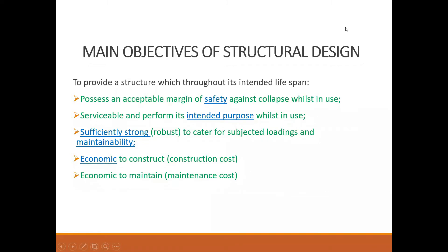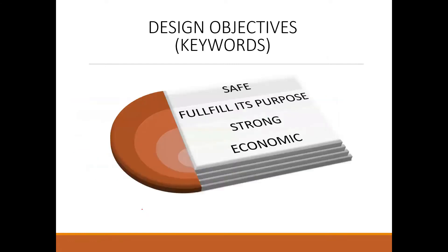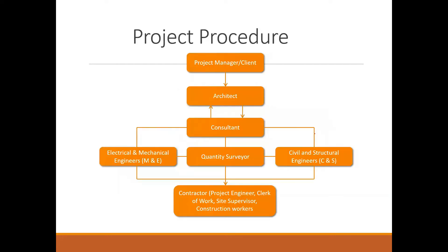The main objective of structural design is that we must possess an acceptable margin of safety. Whatever you do, you must look at safety first. It must be able to service its intended purpose whilst in use, be sufficiently strong to cater for subject loadings, maintainable, and economic to construct and maintain. So the design objectives are: safe, fulfill its purpose, strong, and economic.